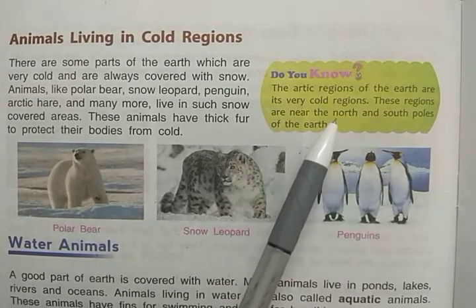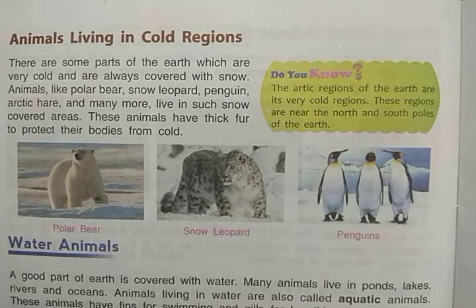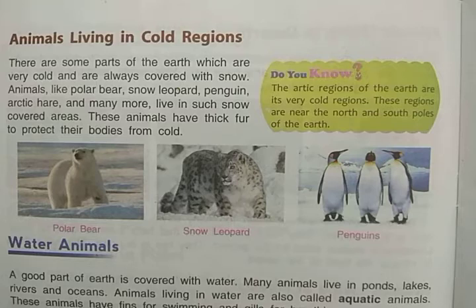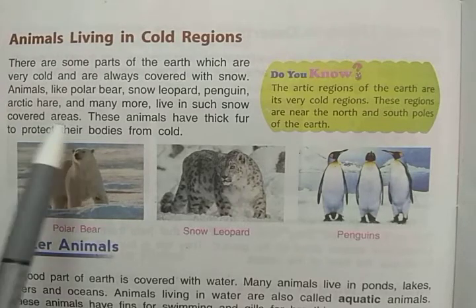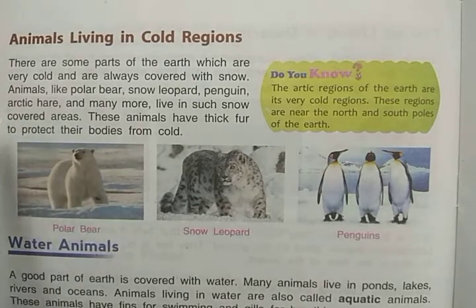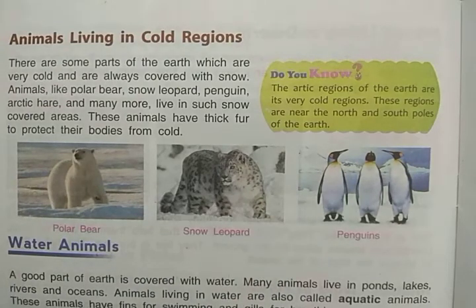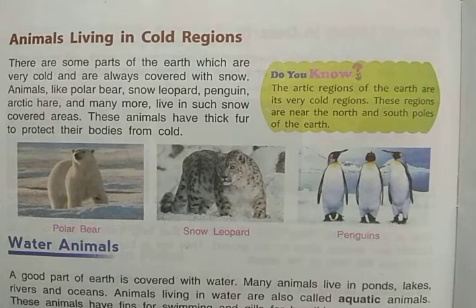These cold regions are near the north and south poles of the Earth. The Earth has two poles — north pole and south pole — where there is always a lot of snow. Animals like polar bear, snow leopard, penguin, arctic hare, and many more live in such snow-covered areas.